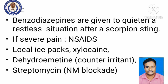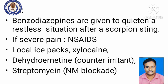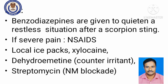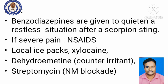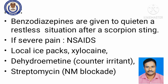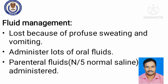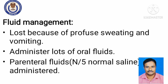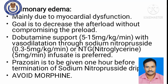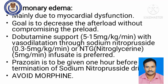To alleviate pain in scorpion poisoning, benzodiazepines can be used, or local ice packs can be applied. For severe itching or irritation at the bitten site, local anesthetics like xylocaine can be used. Counter-irritants can also be used. To prevent neuromuscular blockade, one can use atropine. Fluid management is very important — administer lots of oral fluids; parenterally, normal saline or dextrose normal saline can be used. To counteract pulmonary edema, dopamine and prazosin can be used. Do not use steroids in scorpion poisoning.